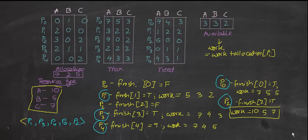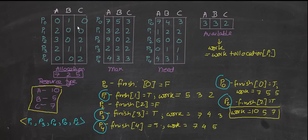Welcome to this Banker's Algorithm tutorial, which is a deadlock avoidance algorithm. In the Banker's Algorithm, you are given the allocation matrix, max matrix, and available matrix. What you need to find is the need matrix. To find the need matrix, you subtract the allocation matrix from the maximum matrix — max minus allocation gives you the need matrix.